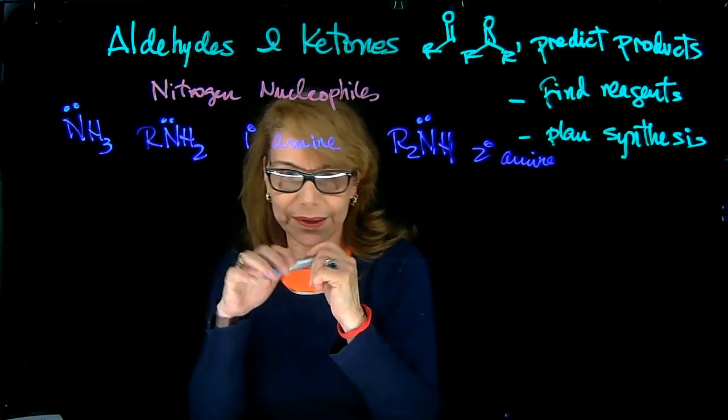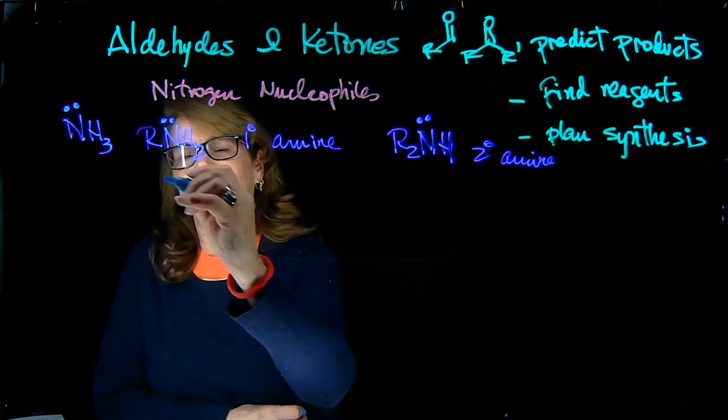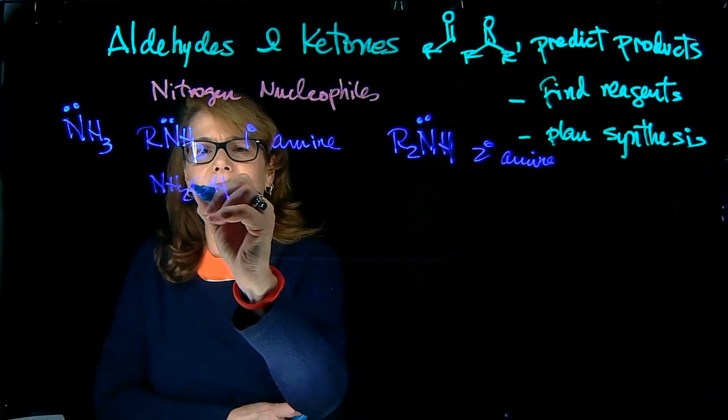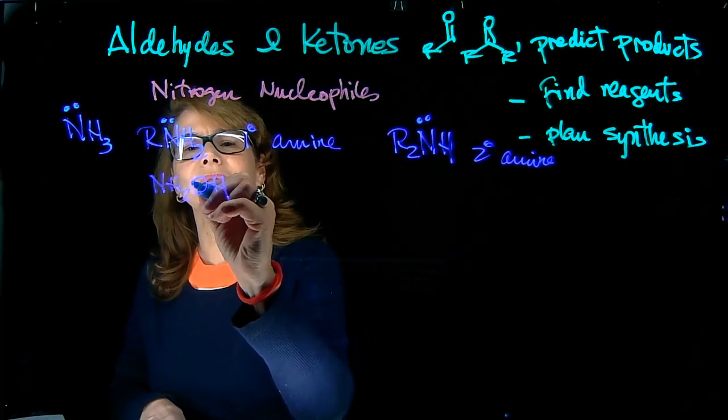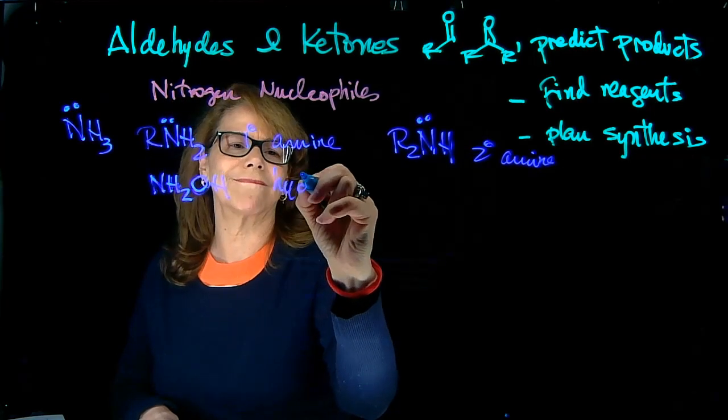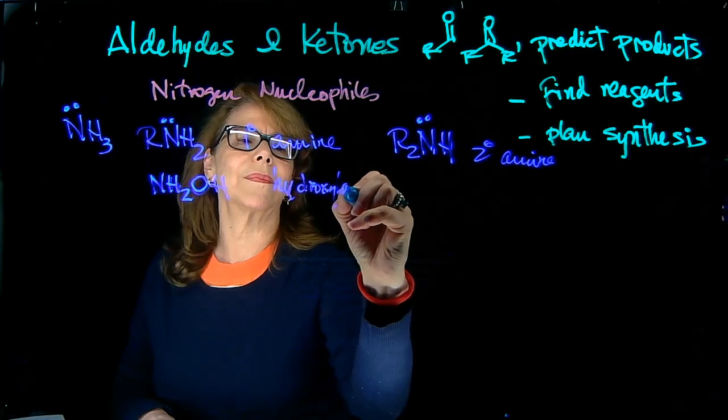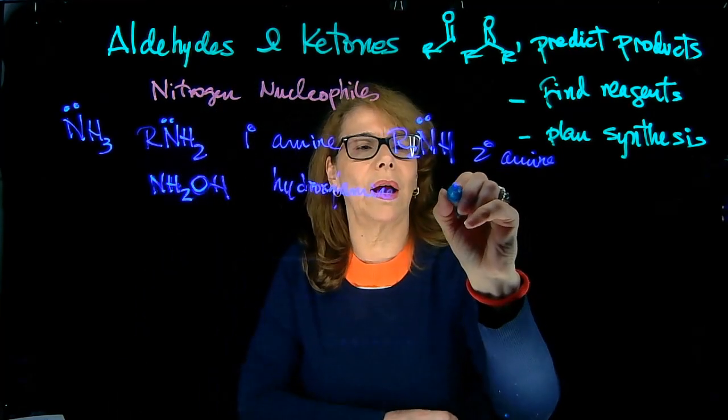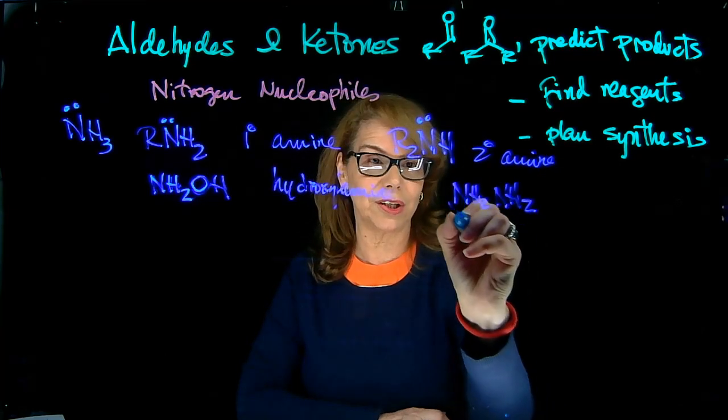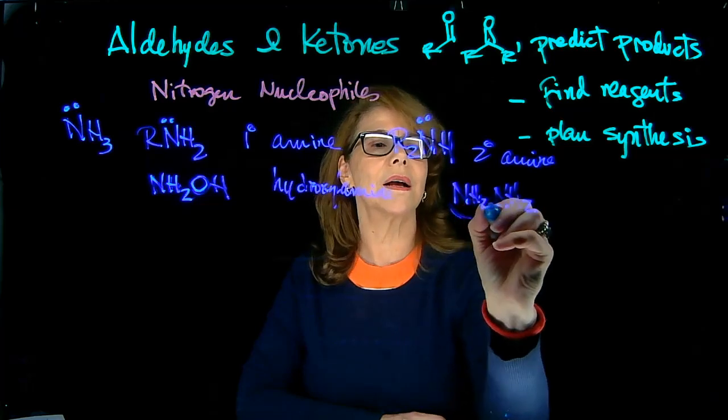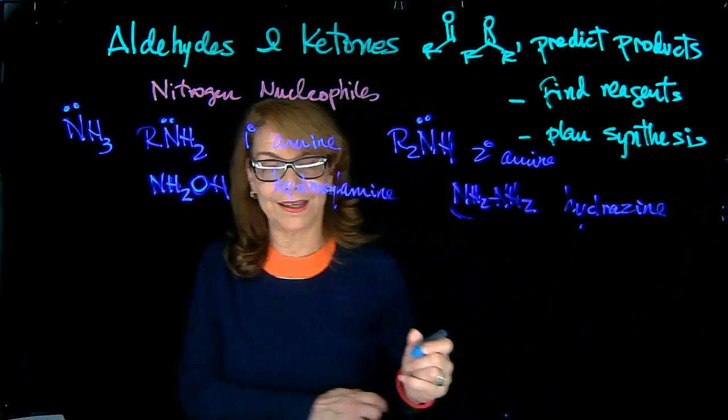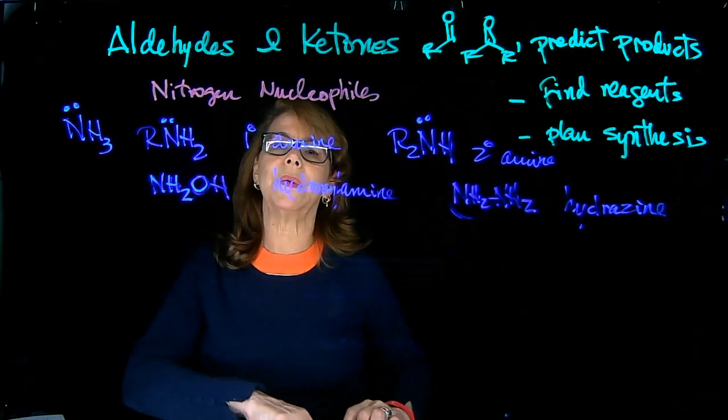And R's can be different things. We can have, for example, this. Here, instead of an alkyl group, we have an OH. So this particular amine is called hydroxylamine. We also have another nucleophile here, NH2-NH2. Imagine that this is your R, one of these. So this is hydrazine and derivatives of that.